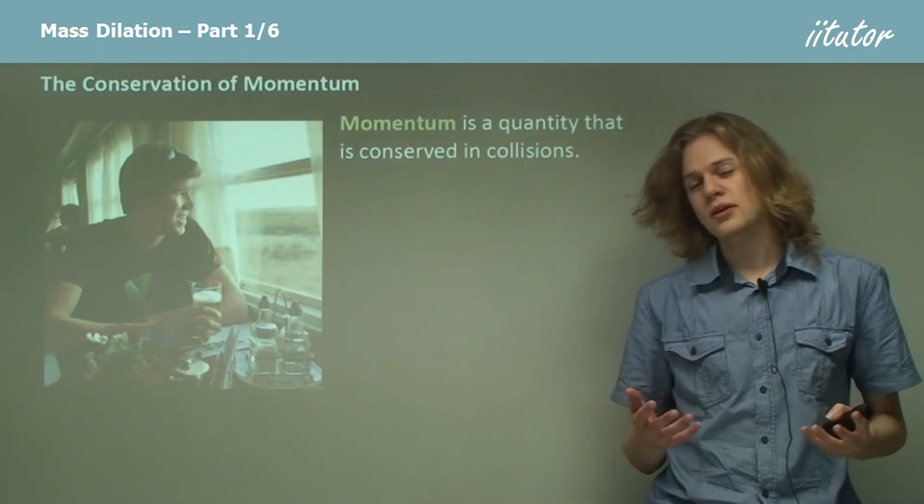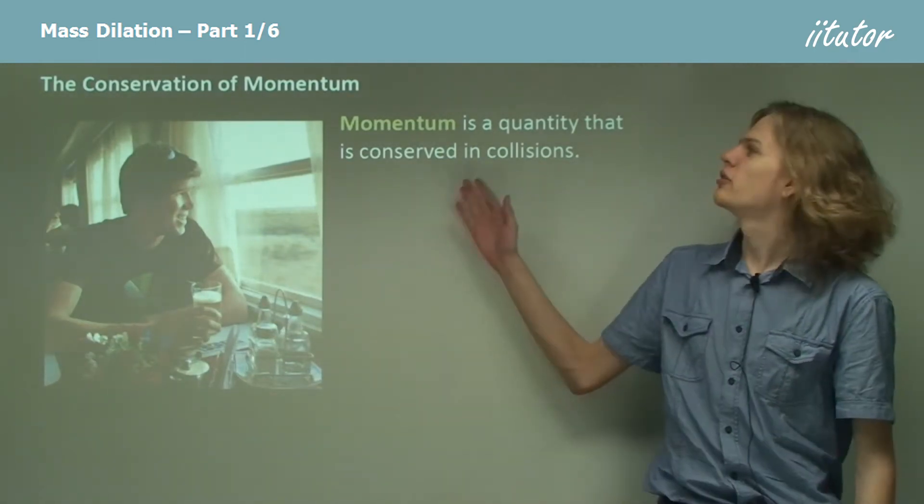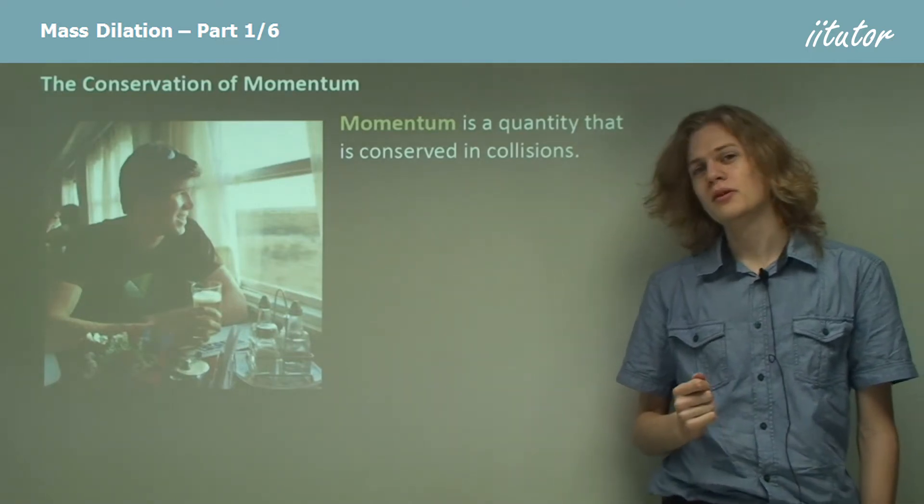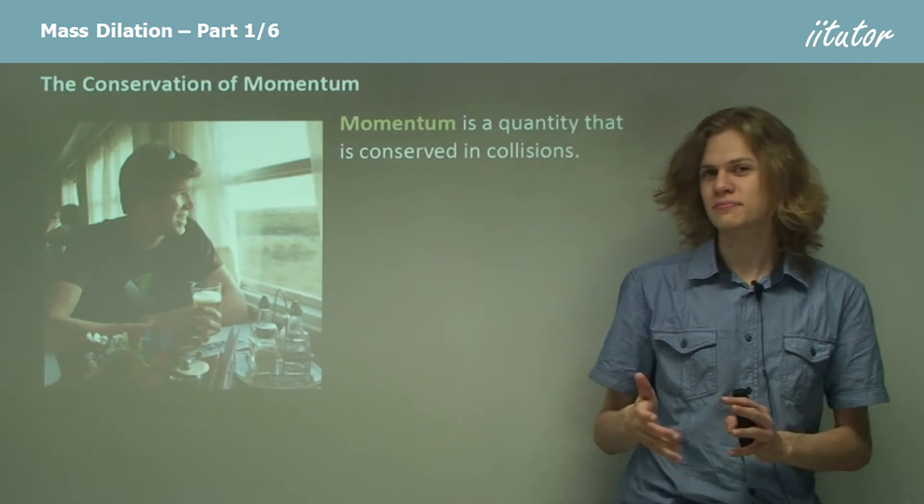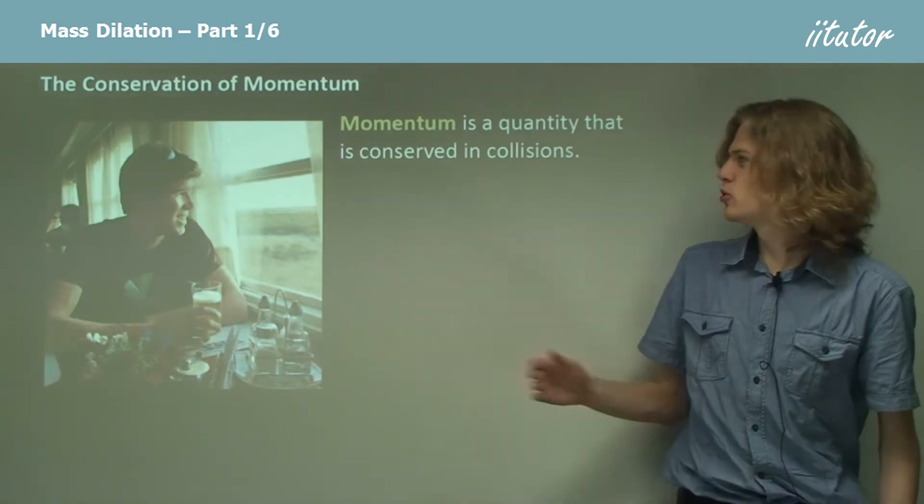So how do we get to mass dilation? We start off with momentum, because momentum is a quantity that depends on velocity and it depends on mass. So it seems a good way to tie in.